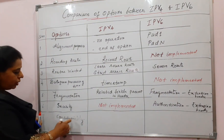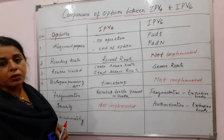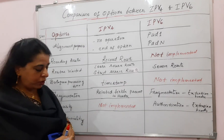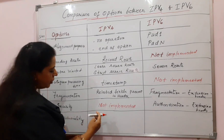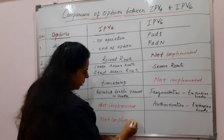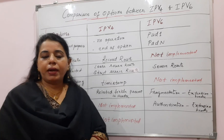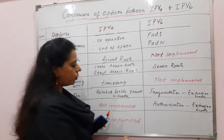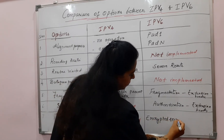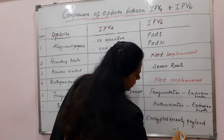For confidentiality — if you want your message to be confidential — in IPv4 there is no field for this feature, so it is not implemented. In IPv6, messages are encrypted and the extension header name is Encrypted Security Payload, which is an extension header.